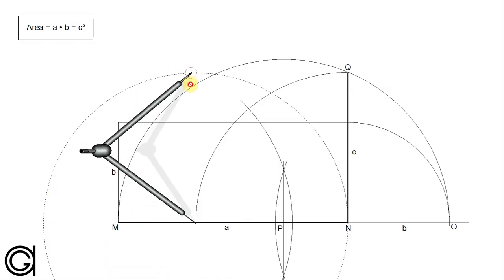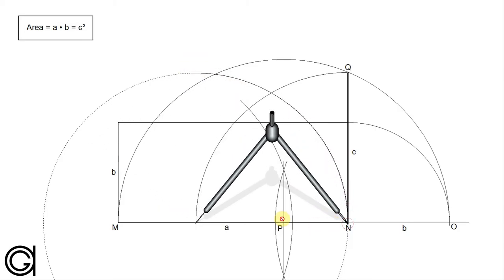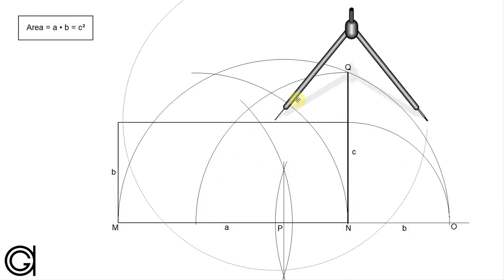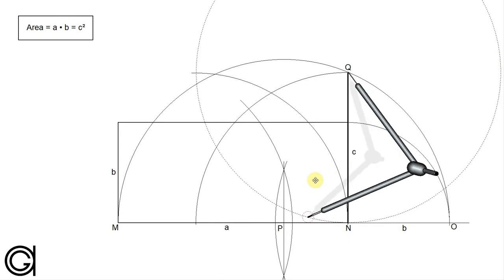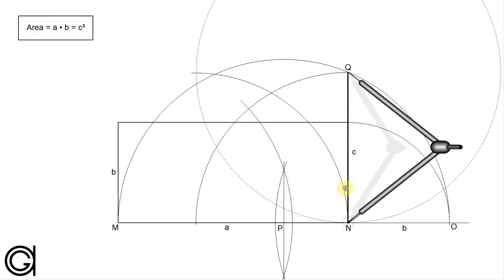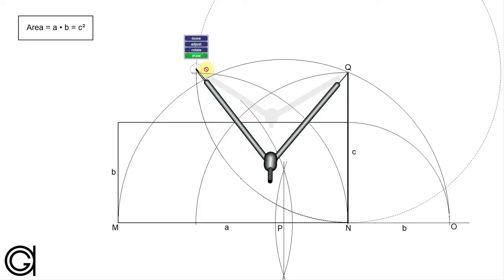To locate the fourth and final vertex, setting the compass on this new intersection with the same radius, we scribe an arc above as shown here. Finally, with the compass set on point q, we scribe another arc to the left until it cuts our previously drawn arc at the final vertex of our square.